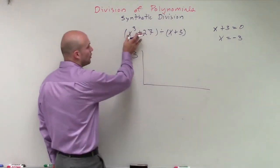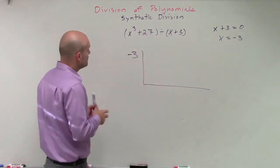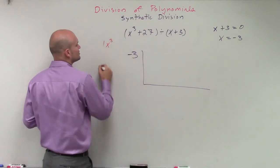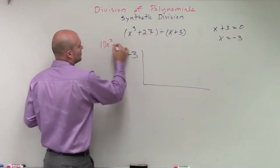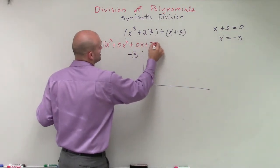Then I know I need to take the coefficient of each one of my terms. And remember, I can rewrite this by including all my values of saying it's x to the cube, which would be like 1x cubed, plus 0x squared plus 0x plus 27.